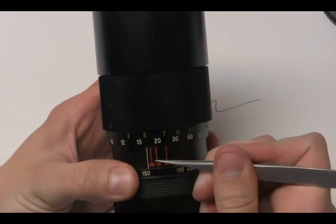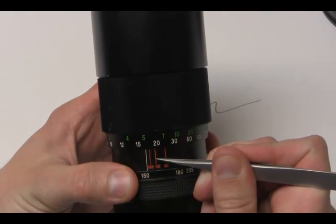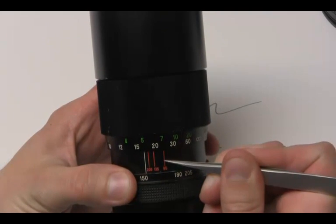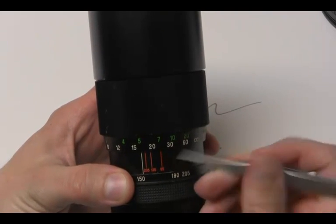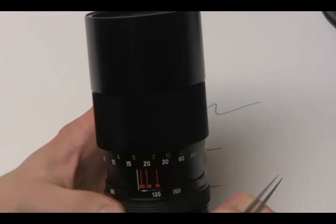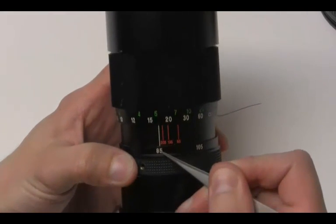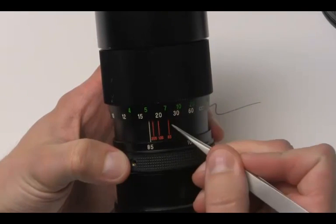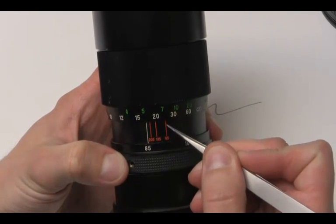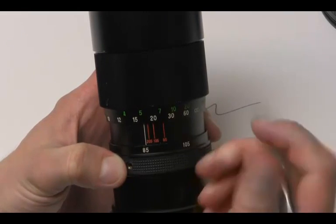But for infrared, as you can see, depending where you are in the zoom range, the amount of focus shift is different. So for example, if you had your camera or lens set to 85 millimeters, basically the amount of focus shift you would have to make is all the way to this third 85 millimeter focus mark.